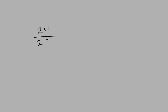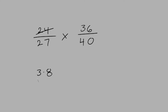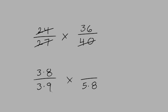Let's try 24 over 27 multiplied by 36 over 40. We need to find common factors in the numerators and denominators. 24 and 40 are both divisible by 8, so 24 can be 3 times 8 and 40 can be 5 times 8. And 27 and 36 are both divisible by 9, so 27 can be 3 times 9 and 36 can be 4 times 9.